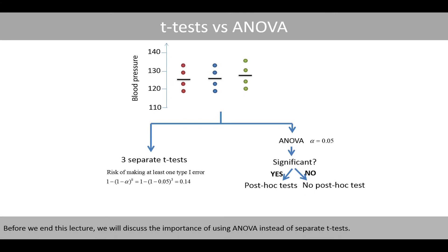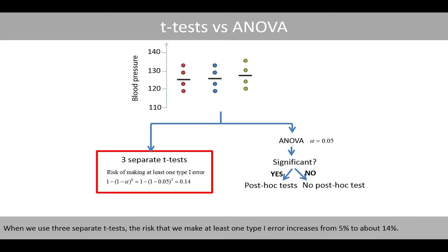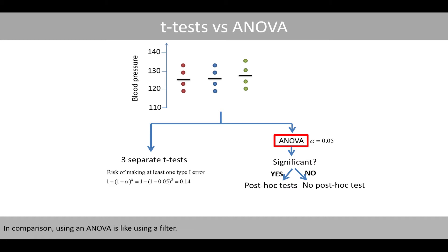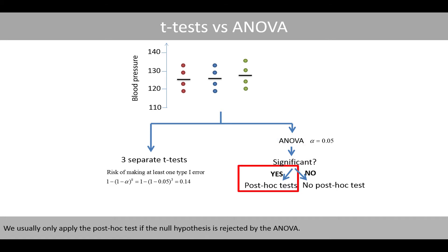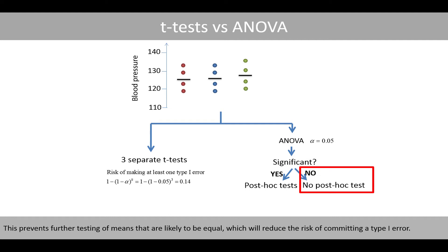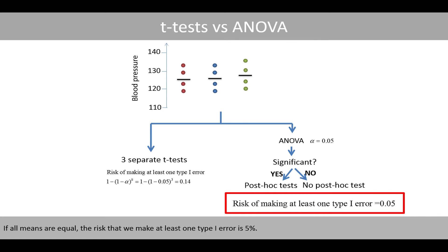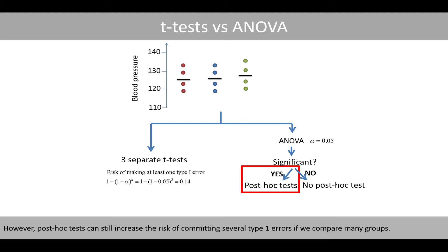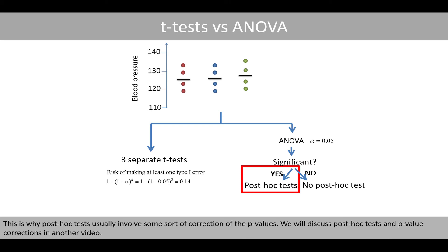Before we end this lecture, we'll discuss the importance of using ANOVA instead of separate t-tests. When we use three separate t-tests, the risk that we make at least one type 1 error increases from 5% to about 14%. In comparison, using ANOVA is like using a filter. We usually only apply the post-hoc test if the null hypothesis is rejected by the ANOVA. If the null hypothesis is not rejected by the ANOVA, we do not perform any further tests. This prevents further testing of means that are likely to be equal, which will reduce the risk of committing type 1 error. If all means are equal, the risk that we make at least one type 1 error is 5%. However, post-hoc tests can still increase the risk of committing several type 1 errors if we compare many groups. This is why post-hoc tests usually involve some sort of correction of the p-values. We'll discuss post-hoc tests and p-value corrections in another video.